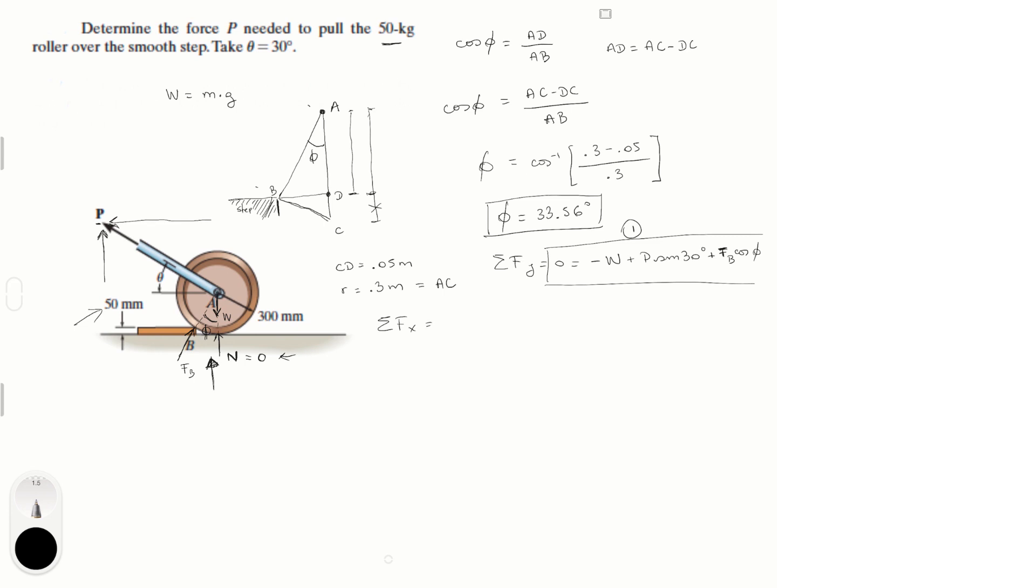Now, sum of the forces in the X is equal to 0. In the X, we have the X component of the P force, which is minus P, because it's going to the left, cosine of 30, plus the horizontal component of the normal at B, the F B force, which is F of B sine of phi.